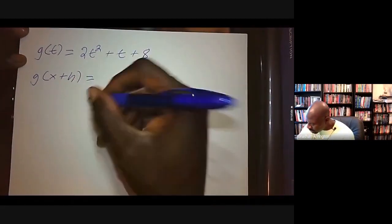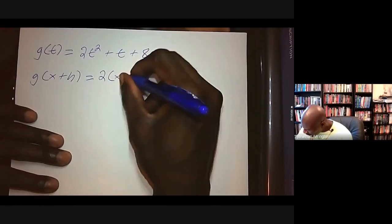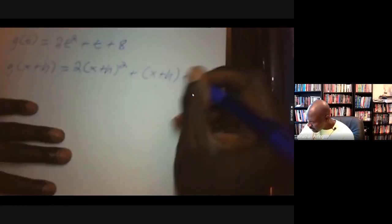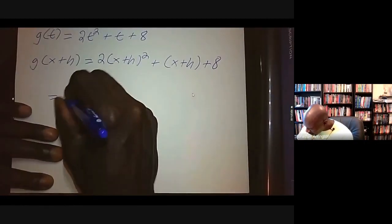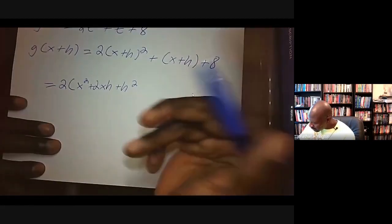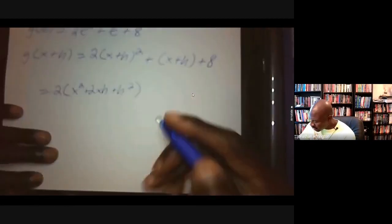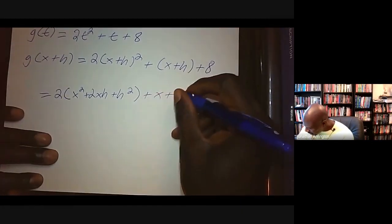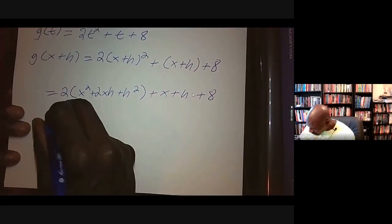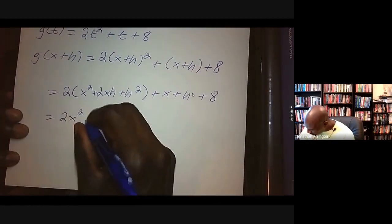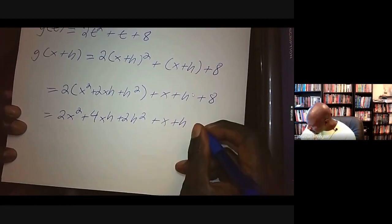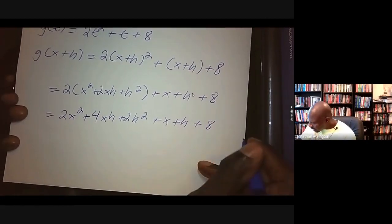Everywhere I see a t, I'll plug in (x + h). So this is 2(x + h)² + (x + h) + 8. I need to square (x + h) first: (x + h)² = x² + 2xh + h². The (x + h) term here has nothing to distribute, so this is just plus x + h, plus 8.